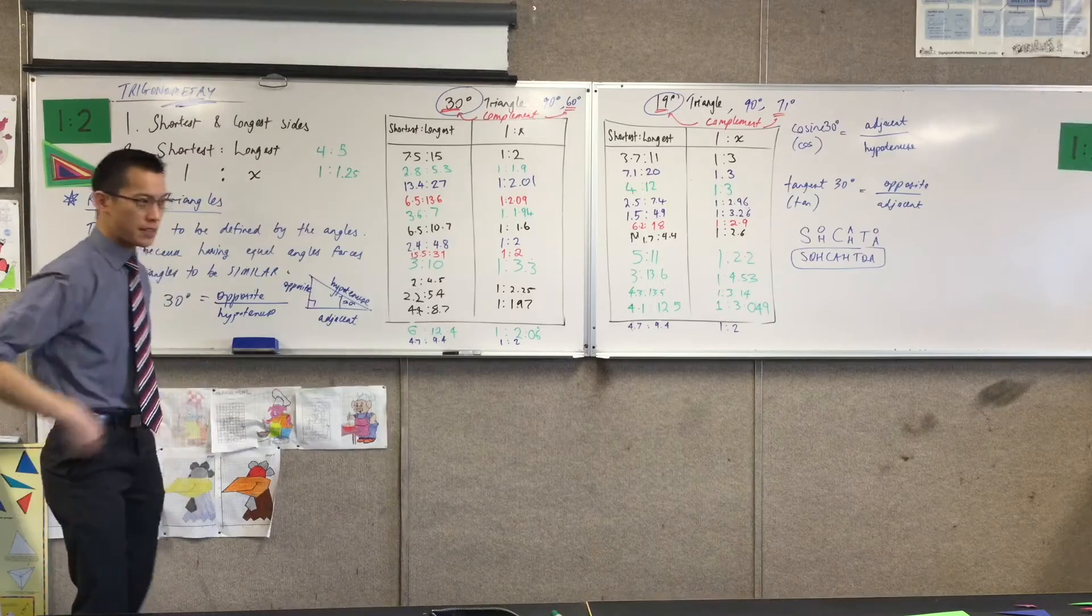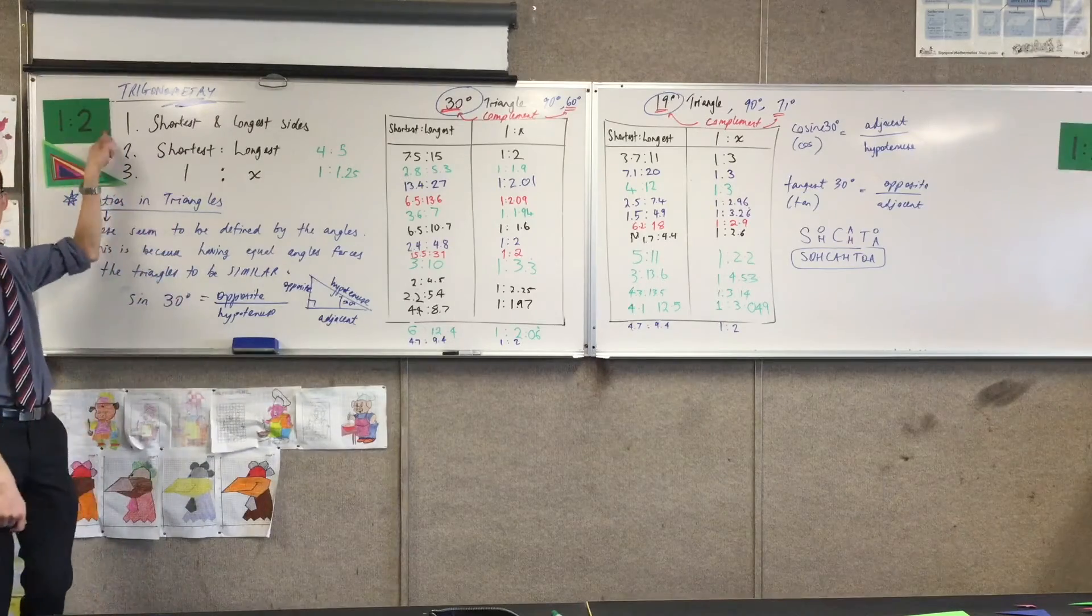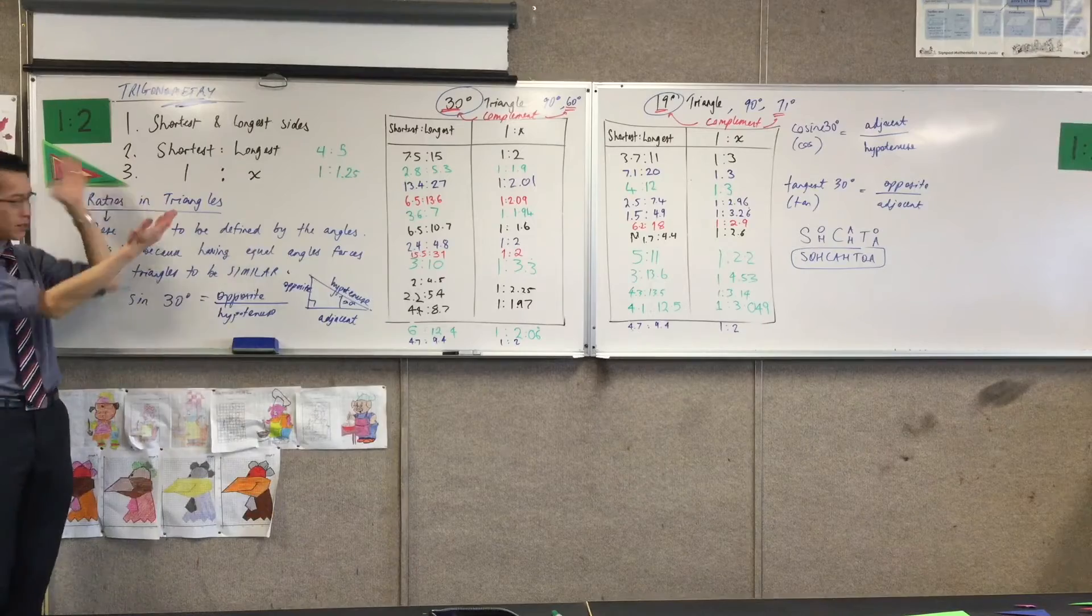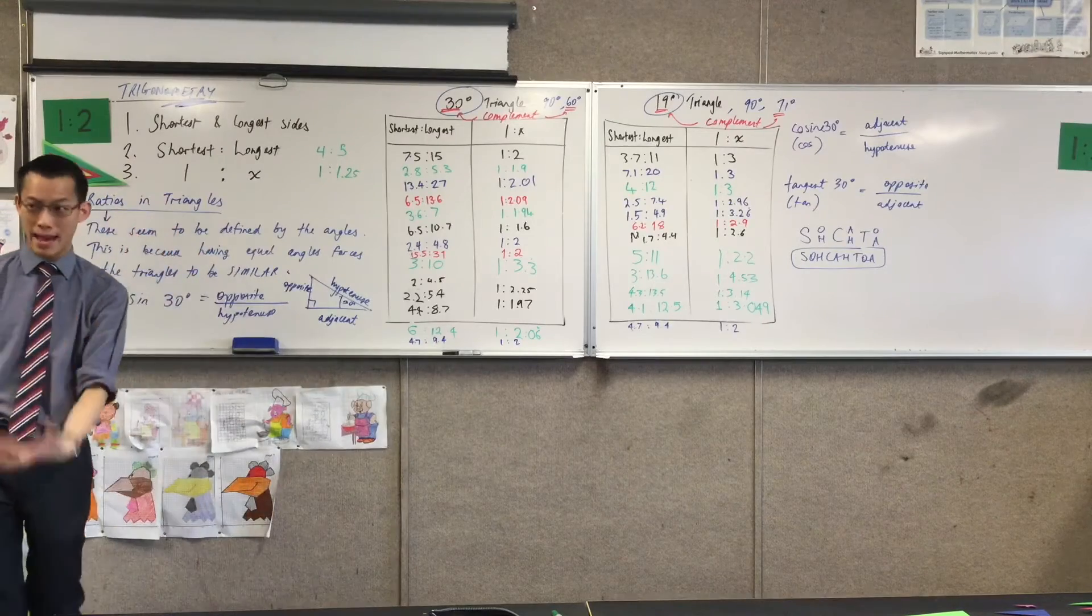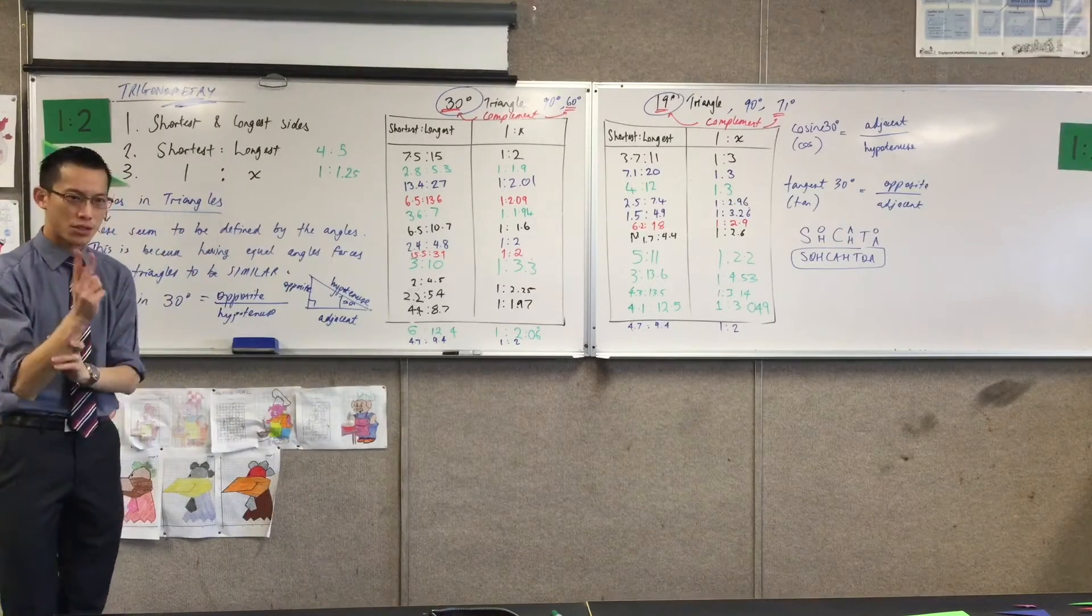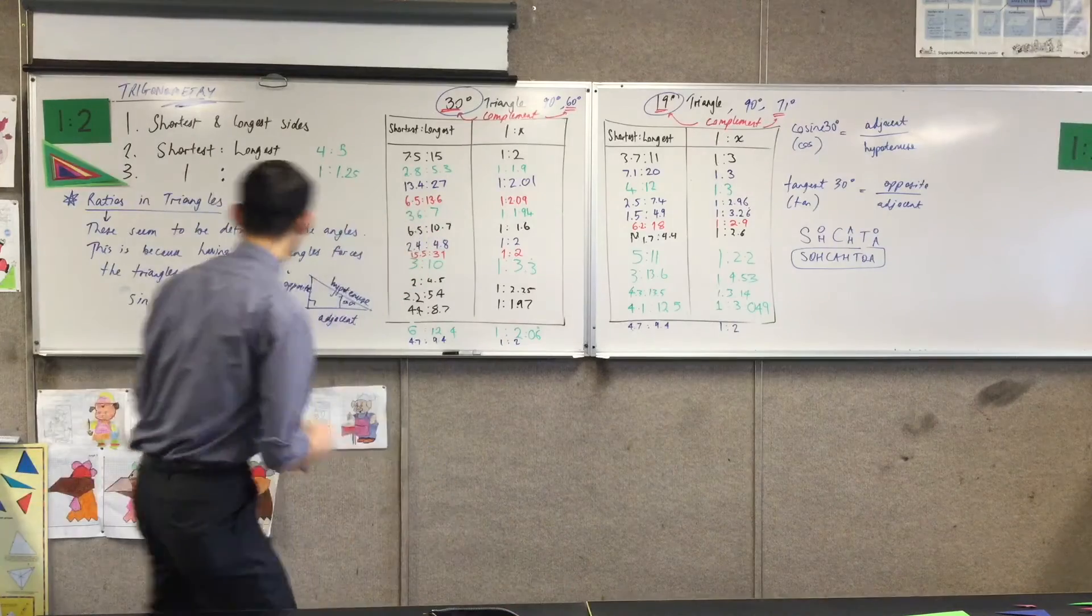Remember I said to you mystery number one? How did I know what was going on here? And the answer was similar shapes. You made similar shapes, almost by accident. Mystery number two was why is this called what it is?